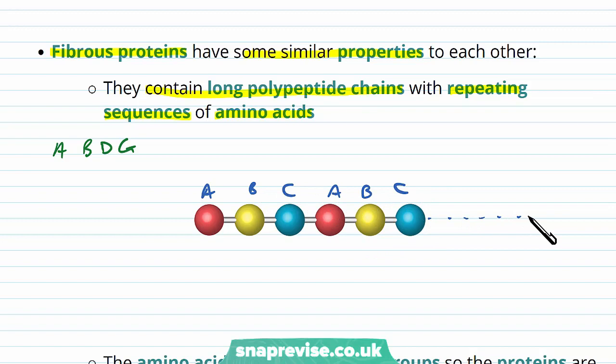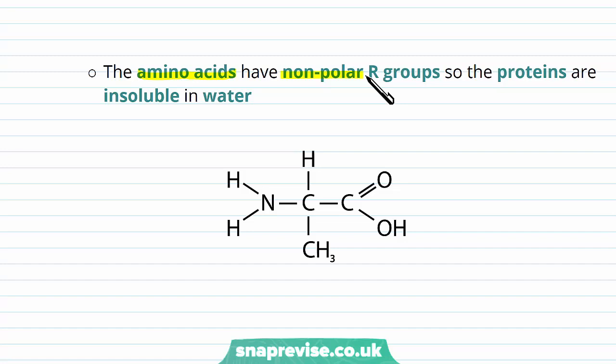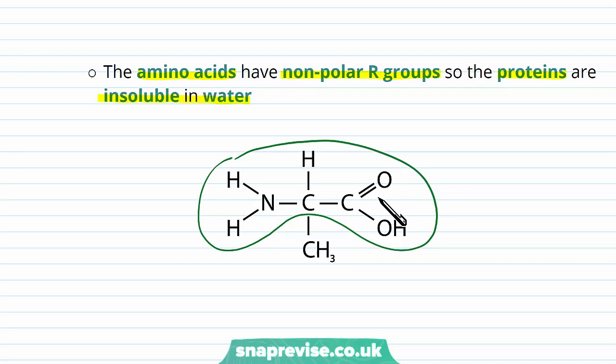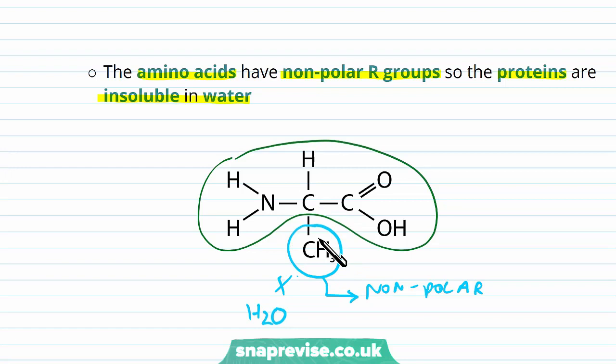The primary sequence of fibrous proteins tends to have some sort of pattern. The amino acids themselves tend to have a non-polar R group, so the proteins tend to be insoluble in water. For an amino acid, the general structure stays the same with the amino, carboxyl and hydrogen groups, but it's the R group which can vary. Because it's non-polar it cannot interact with water, so it doesn't dissolve in fluids like plasma or the cell cytoplasm.